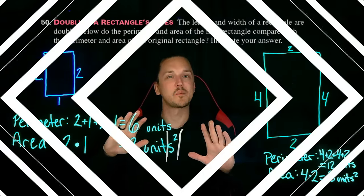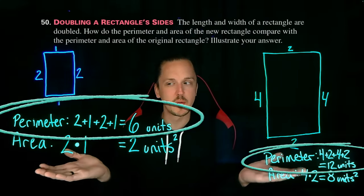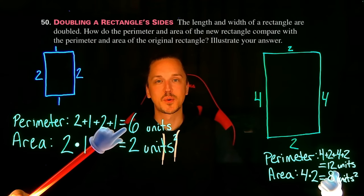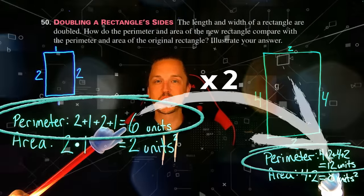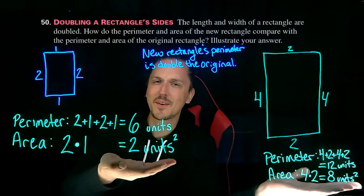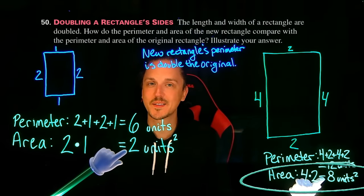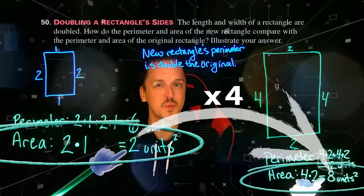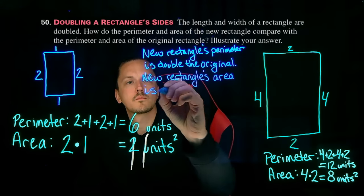All right, take a moment and step back. Do you see the relationship between the perimeters? What about the areas? Let's start with the perimeters. It appears the new rectangle's perimeter is double that of the original rectangle's perimeter. Let's write down this conjecture. And what about the area? Well, it appears that the new rectangle's area is quadruple or four times that of the original rectangle's area. Let's make note of that and complete our conjecture.